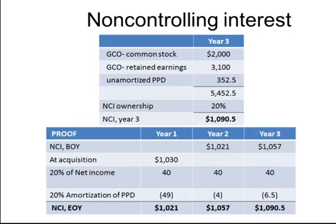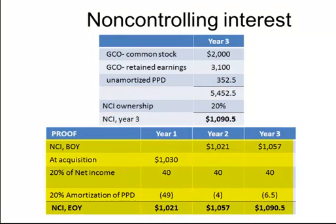Our calculation of non-controlling interest uses the same valuation basis as the parent. We take the shareholders' equity of GCO as reported by the legal entity and adjust it for the remaining unamortized purchase price discrepancy arising from the acquisition costs. 20% of this amount represents the non-controlling interest reported in the shareholders' equity section of the consolidated balance sheet. We can prove this calculation by recalculating the non-controlling interest using the equity method — both methods should leave us in the same position.